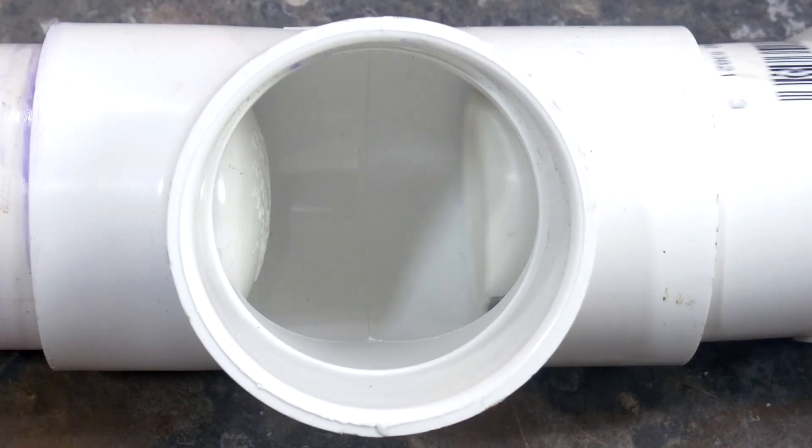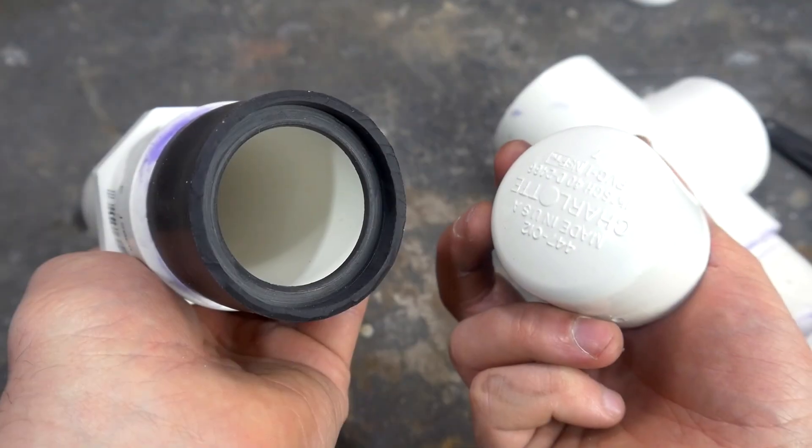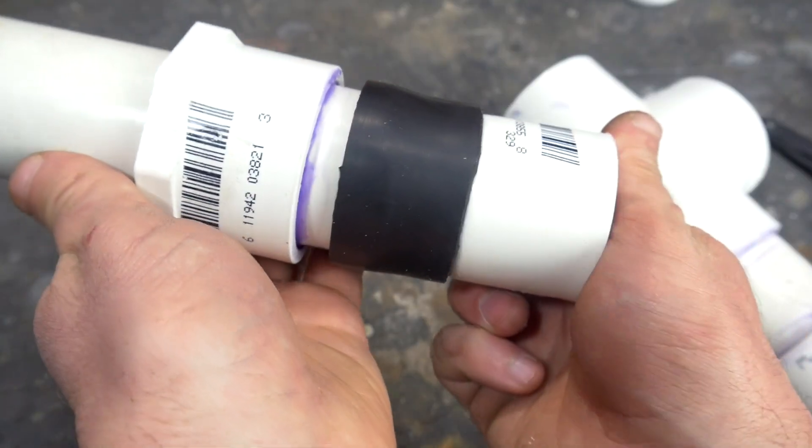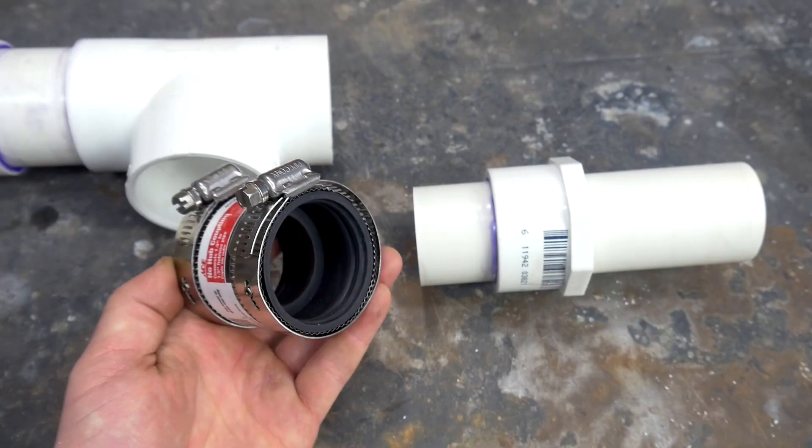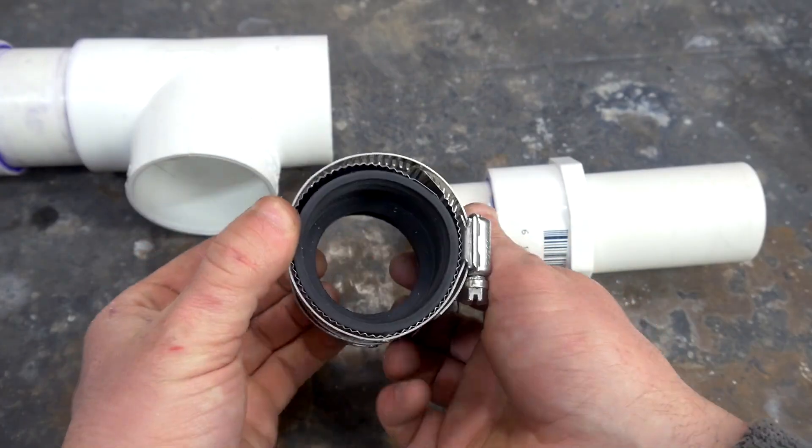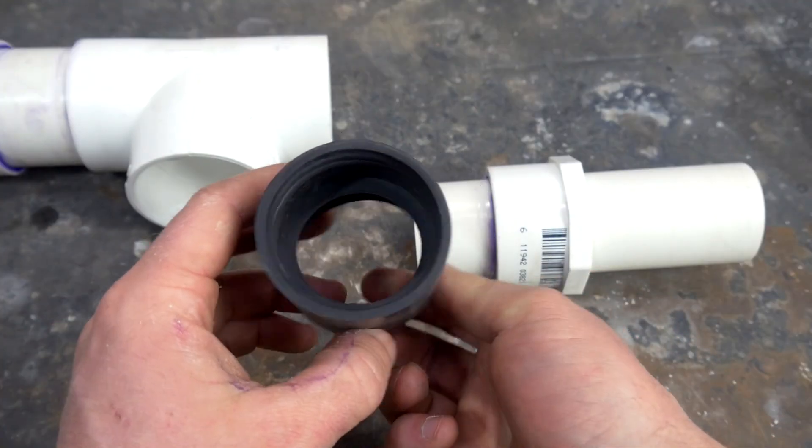We can now see how the pipe will sit in the T-fitting, but before it's attached permanently, it needs a rubber seal so that no air can leak by when the piston is pressed against it. I'm using a rubber coupling which is made to slip over the outside of 1.5-inch pipe. The one I found has a metal sleeve on the outside, which is easily removed.